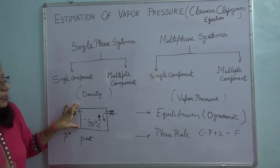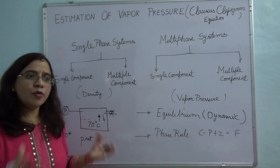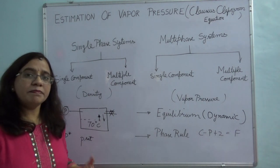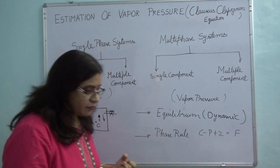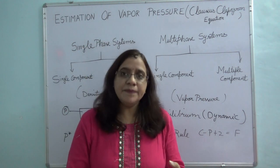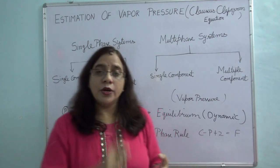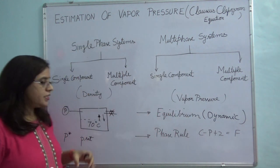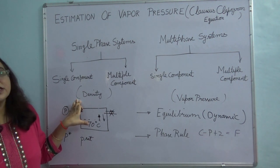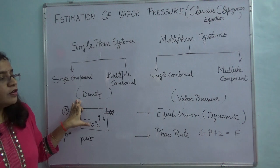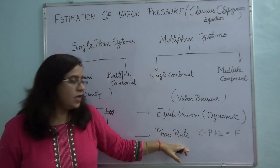Now when you have two phases in equilibrium, there will be many parameter values you want to know — say for example enthalpy, entropy, specific volume, internal energy. Do you have to define all these? The answer is simply no. For that, the Gibbs phase rule comes into picture. The Gibbs phase rule gives you the degree of freedom for the system.